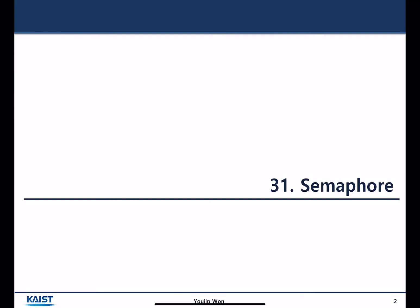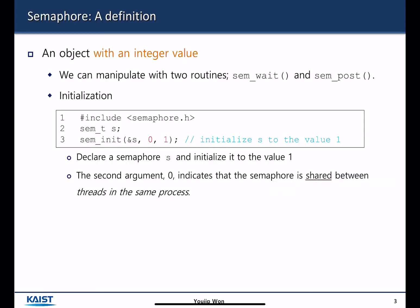The topic of this lecture is semaphore. A semaphore is an object with an integer value. There are two functions for a semaphore: sem_wait and sem_post. There is also sem_init, which has three parameters: the address of the semaphore variable, whether the semaphore is shared among threads or not, and the initial value of the semaphore.